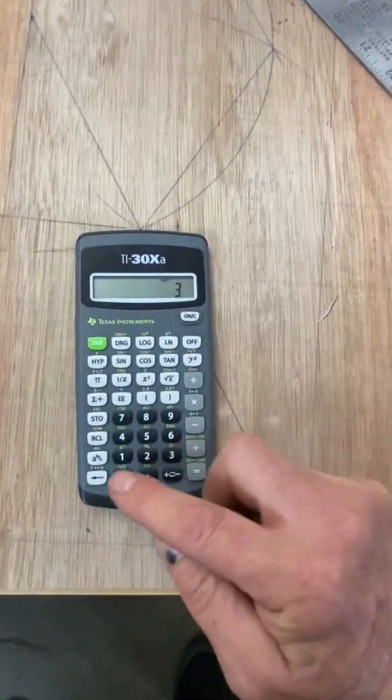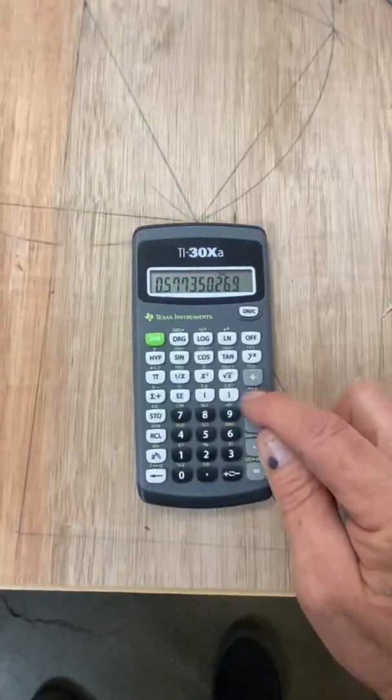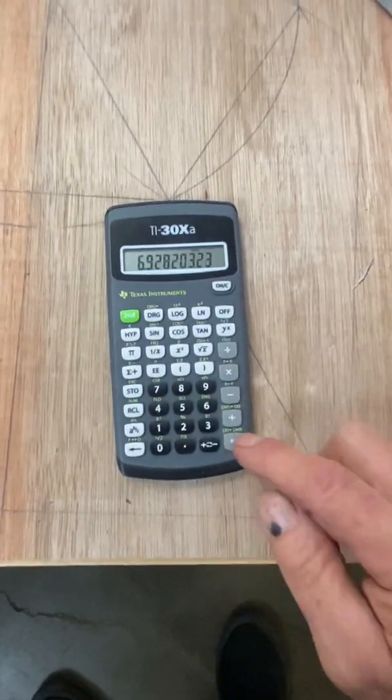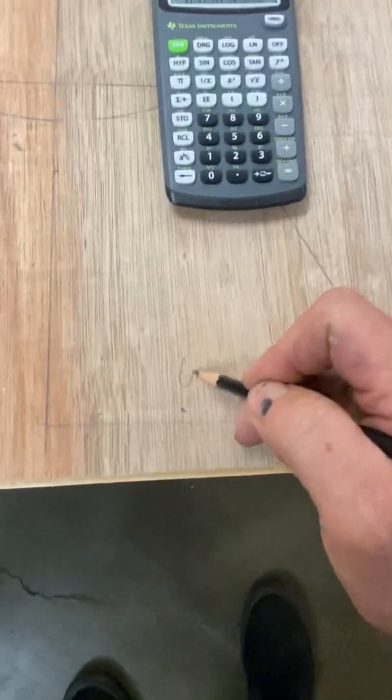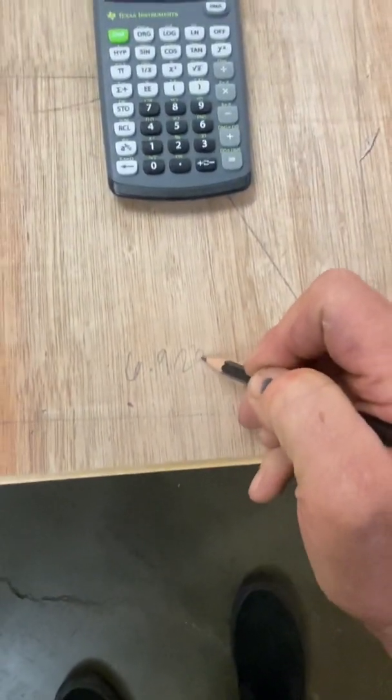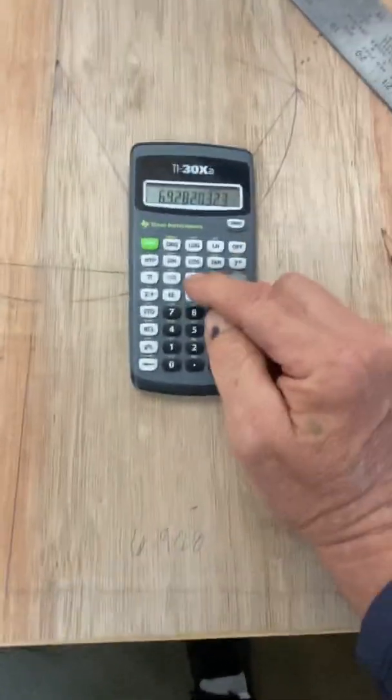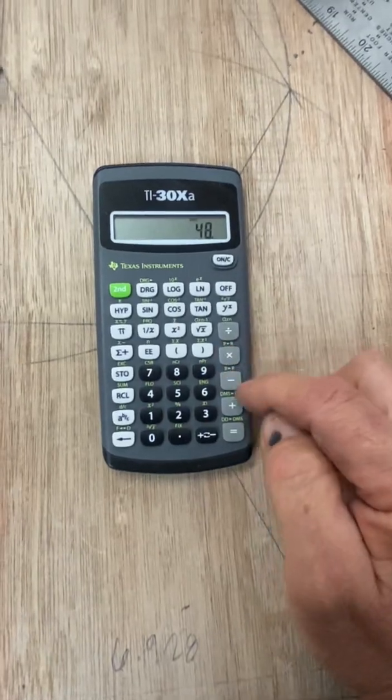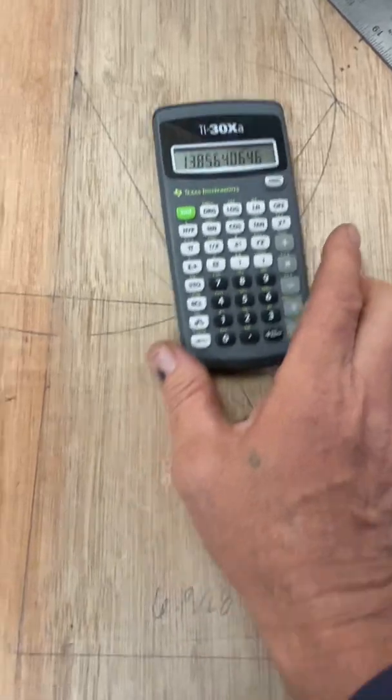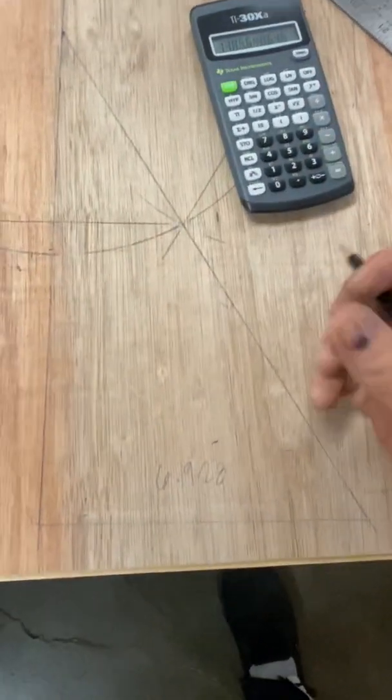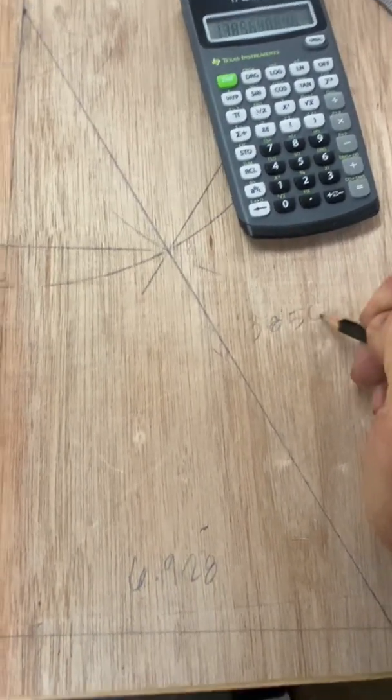We have the angle, we can do it. So here we go, we're going to go 30 tangent, that'll give us the rise ratio times the given 12 equals 6.928. You label this 6.928. And then a squared plus b squared equals c squared. So squared plus 12 squared equals square root of this is 13 and 7/8. This one is 13.856. This is 12.